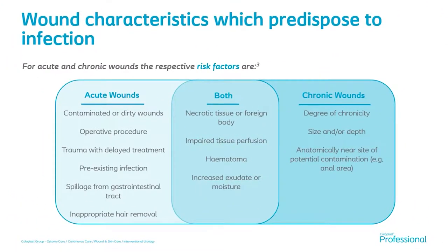What predisposes somebody to infection? If we look at acute wounds, it can be the type of surgery somebody has undergone — for example, was this a dirty surgery, a bowel surgery? They might be at higher risk of developing infection because of that. Or we could be looking at chronic wounds — how long the wound has been there, the size and depth of the wound, or where it's placed on the body, its anatomical location. For example, if it were around the sacral area, it might be higher risk than a wound on an arm.